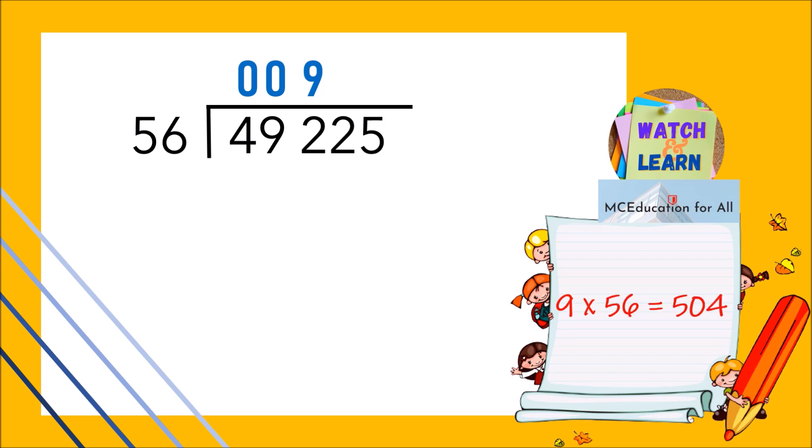Seeing that 504 is greater than 492, it means that 9 is not the right choice. Instead, reduce it to 8 so it will fit in. Then 8 times 56 is 448. 492 minus 448 is 44.